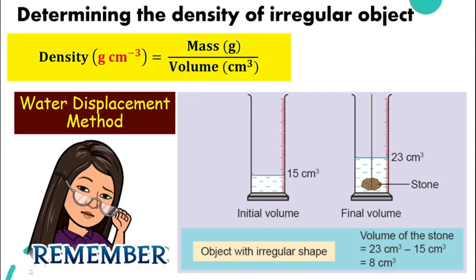So for example, if we want to find the density of this stone, we can weigh it to find the mass. And we can use the water displacement method to find the volume. And once we have the mass and the volume, we can find the density.